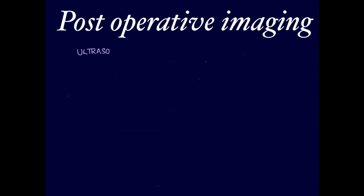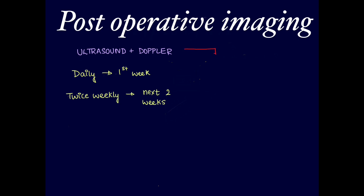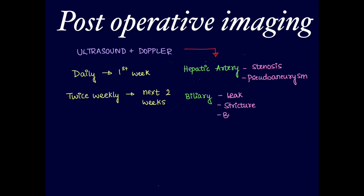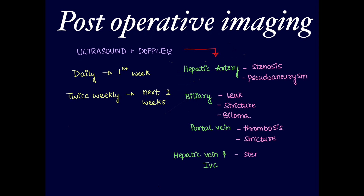After transplantation, post-operative imaging of the recipient uses ultrasound plus Doppler — daily for the first week, then twice weekly for the next two weeks. On Doppler, we assess: hepatic artery for stenosis or pseudoaneurysm; biliary system for leak, stricture, and biloma formation; portal vein for thrombosis or stricture; and hepatic veins and IVC for stenosis or thrombosis.